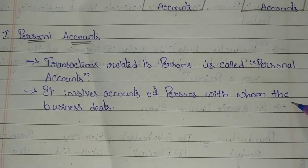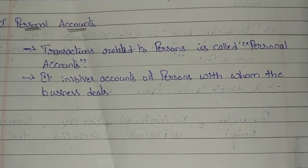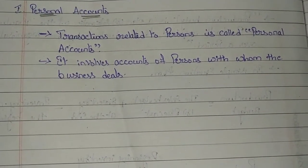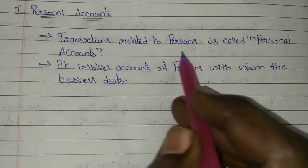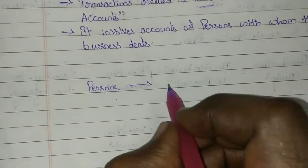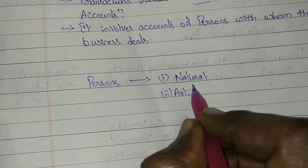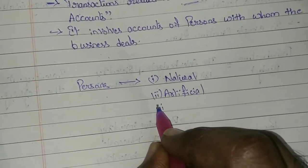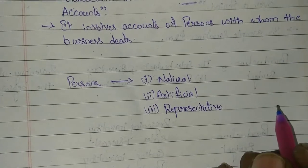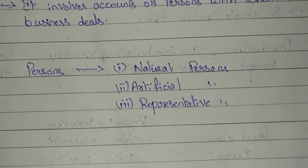Whatever business transactions you are identifying — if the transaction is dealing with persons of the business, then they are considered personal accounts. The persons involved in the business are classified into three categories: natural persons, artificial persons, and representative persons. All three types of persons will be considered under personal accounts.